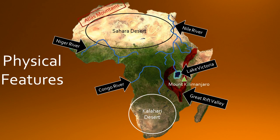And lastly we have Mount Kilimanjaro. It is located near Lake Victoria. It is the tallest mountain in Africa and is part of a mountain range called the Eastern African Mountains.